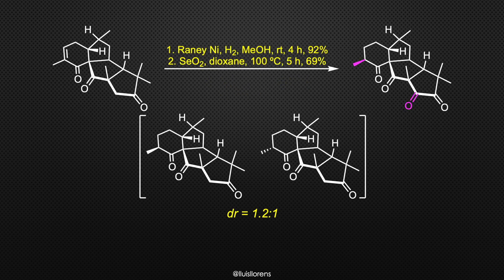A stereoselective 1,4-reduction of the alpha-beta unsaturated ketone using Raney nickel and hydrogen gave a mixture of diastereomers that could be separated by flash column chromatography. Finally, Riley oxidation of the desired isomer with selenium dioxide in dioxane delivered Averuron in 69% yield.